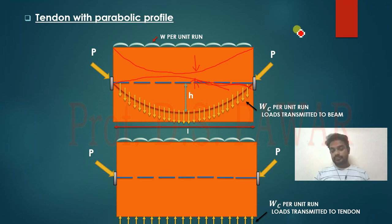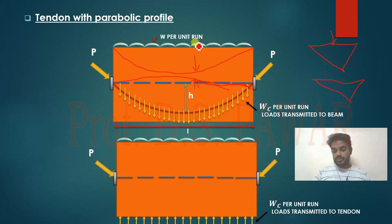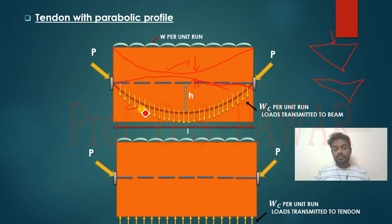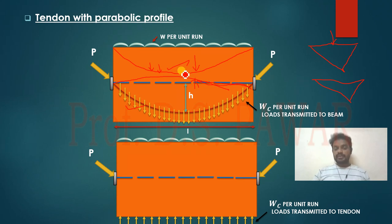When the beam is subjected with a point load, the bending profile of the tendon is triangular, so we provide a bent tendon. When the beam is subjected with a large UDL, the bending moment diagram is parabolic, so we keep the shape of the tendon parabolic. This parabolic tendon counteracts the external load coming on the beam, so in calculation of moment we consider a reduced net load.